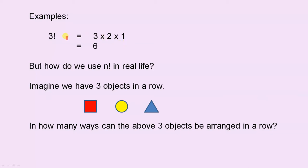Here's a simple example. 3 factorial. If we use the rule on the previous slide, we have 3 factorial equals 3 times 2 times 1, and that gives us 6. So, now we know how to calculate n factorial, and here's a particular example.